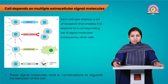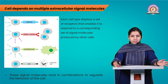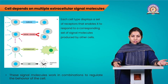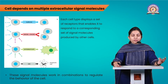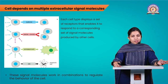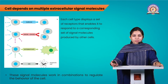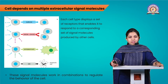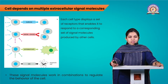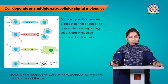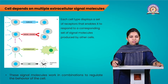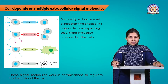Cells depend on multiple extracellular signal molecules. Each cell type displays a set of receptors that enables it to respond to a corresponding set of signal molecules produced by other cells. These signal molecules work in combination to regulate cell behavior. Some signals are required for survival, some for growth and division, and some for differentiation. If there is a lack of appropriate signals, the cell can undergo programmed cell death, called apoptosis.